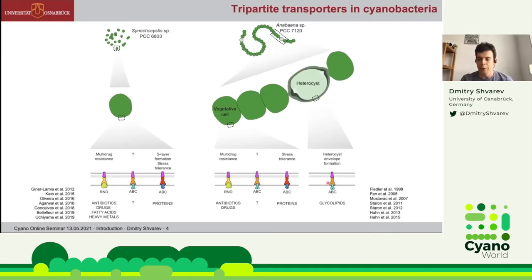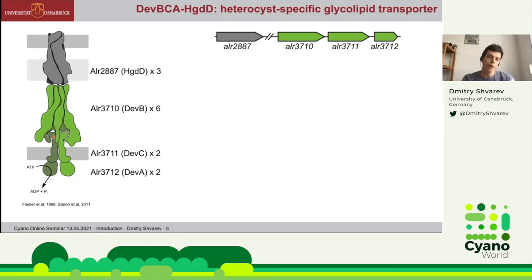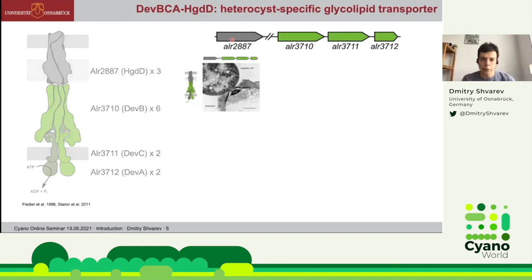The transporter involved in heterocyst-specific glycolipid export in Anabaena is one of the most investigated tripartite transporters. Its architecture, not yet structurally confirmed but biochemically and functionally confirmed, is composed of the outer membrane protein HDDD, the membrane fusion protein DFB, and the inner membrane ABC transporter proteins DFC and DFA. The genes encoding these components belong to one operon, while the gene for the outer membrane protein HDDD is located elsewhere in the genome.